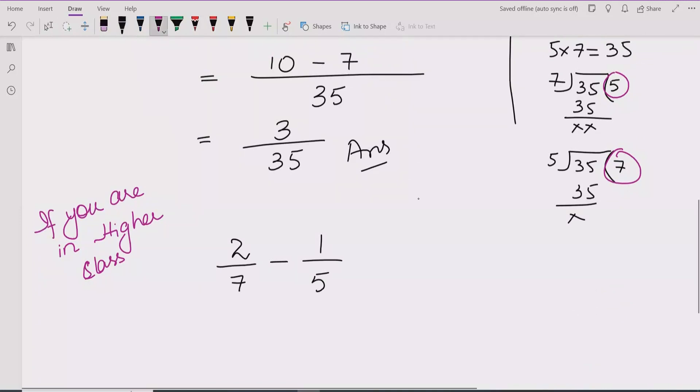So here we will apply the butterfly method like this one, 2 multiplied by 5 which is 10. This one is minus so we will write minus. If we have plus so we will write plus sign. 7 times 1 is 7.